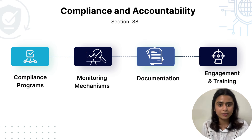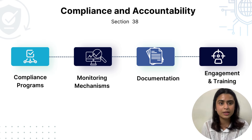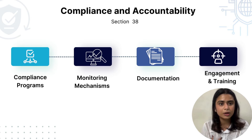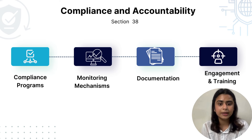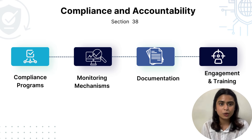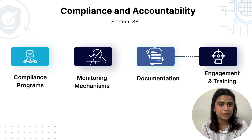Fourth, engagement and training. We have to engage employees at all levels and provide ongoing training on compliance requirements. For example, Adobe provides continuous training for its employees on data protection and compliance, fostering a culture of accountability. Ongoing training ensures that all employees are aware of their roles in maintaining compliance, promoting a culture of accountability and data protection. In conclusion, implementing these mechanisms effectively will strengthen organizational governance and enhance compliance with the DPDP Act 2023, ensuring the organization is prepared for all data protection complexities.